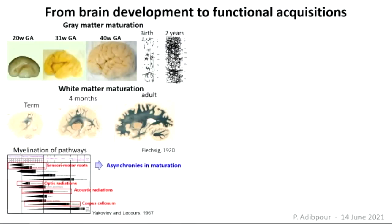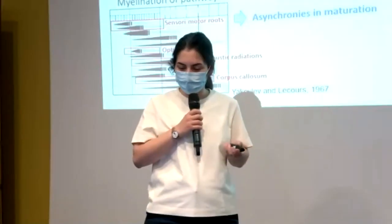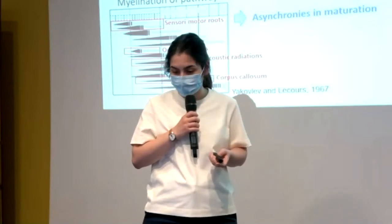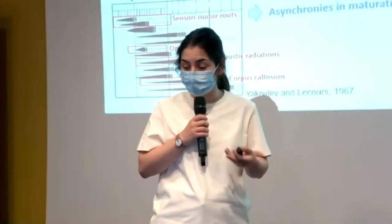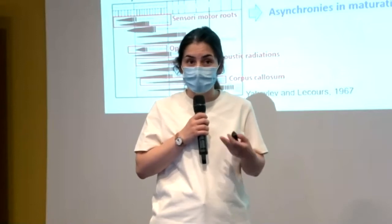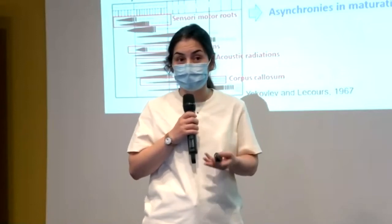Interestingly, all these maturational processes happen in an asynchronous manner in the infant brain. For example, the progression of myelination occurs at different rates and times across the development along different pathways. At the same time, behavioral acquisitions of infants are also happening asynchronously.